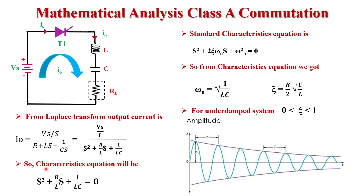This gives the characteristic equation S² + (R/L)S + 1/LC = 0. The standard second-order characteristic equation is S² + 2ζωₙS + ωₙ² = 0. Comparing these two equations, we find ωₙ = √(1/LC) and ζ = (R/2)√(C/L).